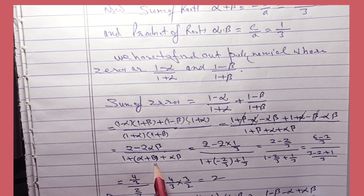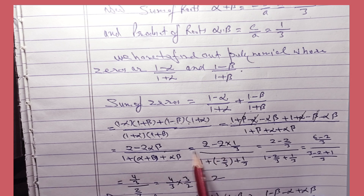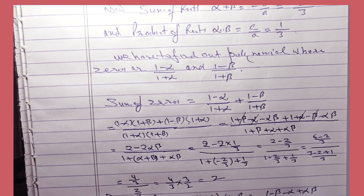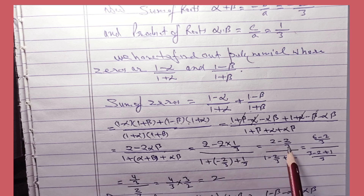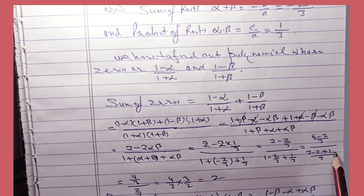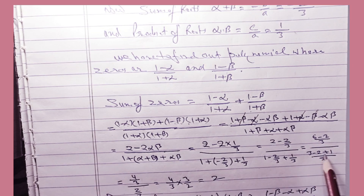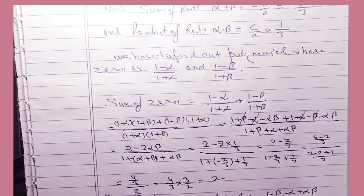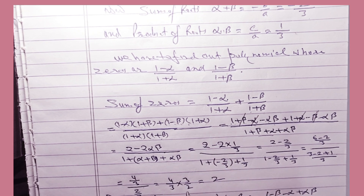So the sum simplifies to (2 - 2αβ) / (1 + α + β + αβ). Now substituting values: αβ = 1/3 and α + β = -2/3. Numerator: 2 - 2(1/3) = (6 - 2)/3 = 4/3. Denominator: 1 + (-2/3) + (1/3) = (3 - 2 + 1)/3 = 2/3. So sum = (4/3) ÷ (2/3) = 2.